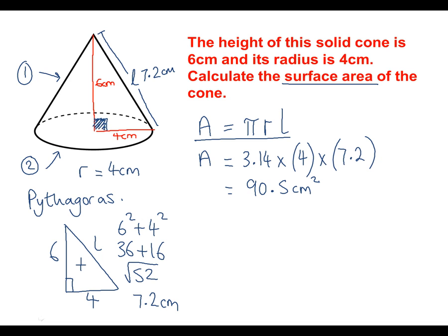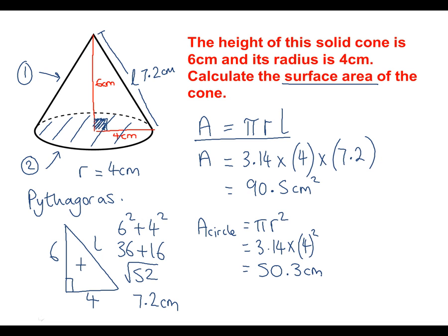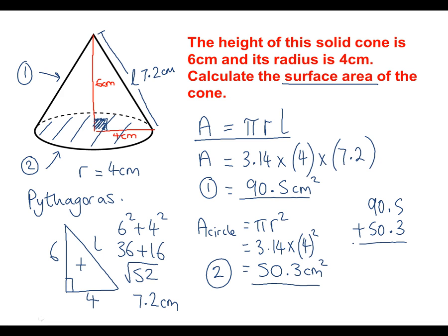We must not forget that we have a circle at the bottom of the cone, so we must also work out the area of the circle and add it on. The formula for the area of a circle is πr²: 3.14 × 4 centimetres squared. Type that into a calculator and we get 50.3 centimetres squared. So we now have our two parts: the curved part is 90.5 cm² and the circle at the bottom is 50.3 cm². Adding these up: 90.5 + 50.3 gives a total surface area of 140.8 centimetres squared.